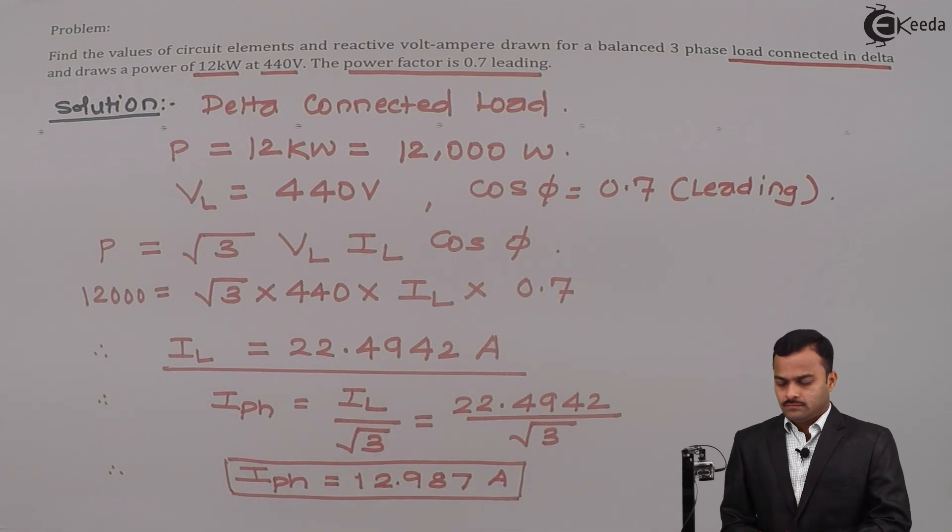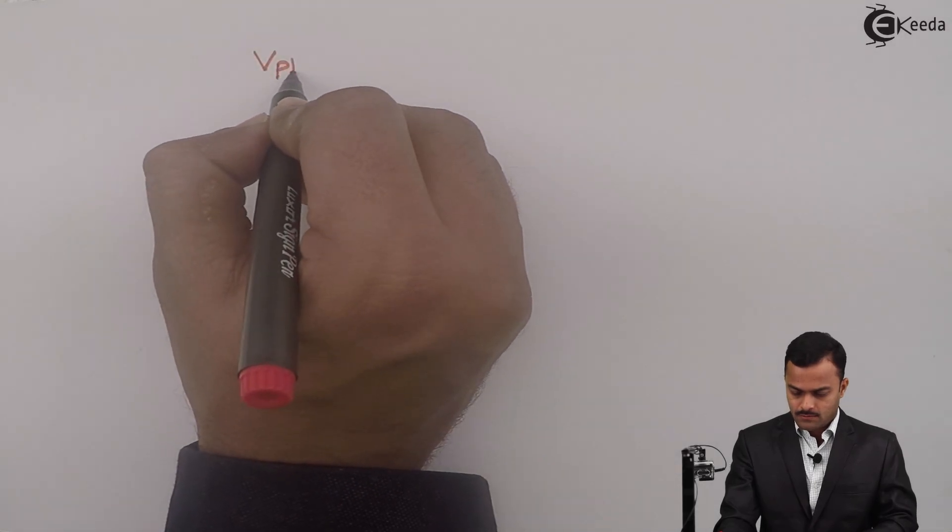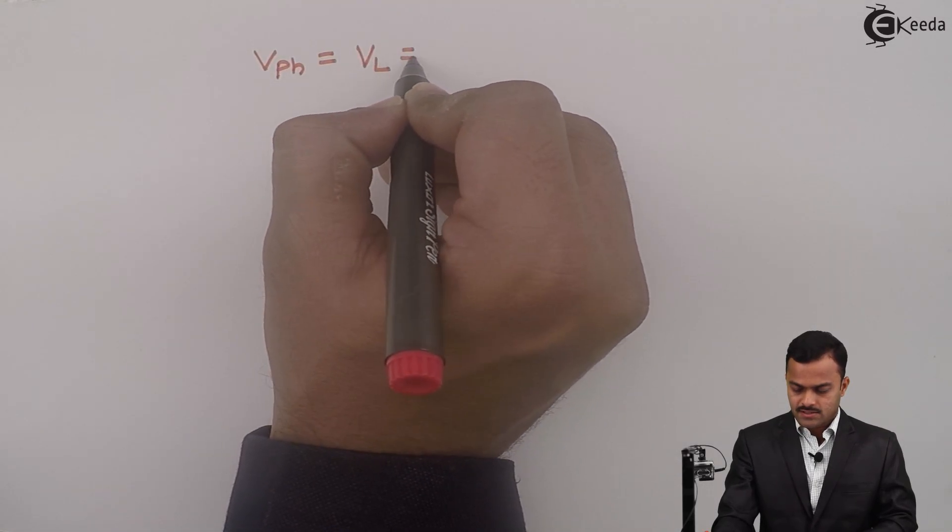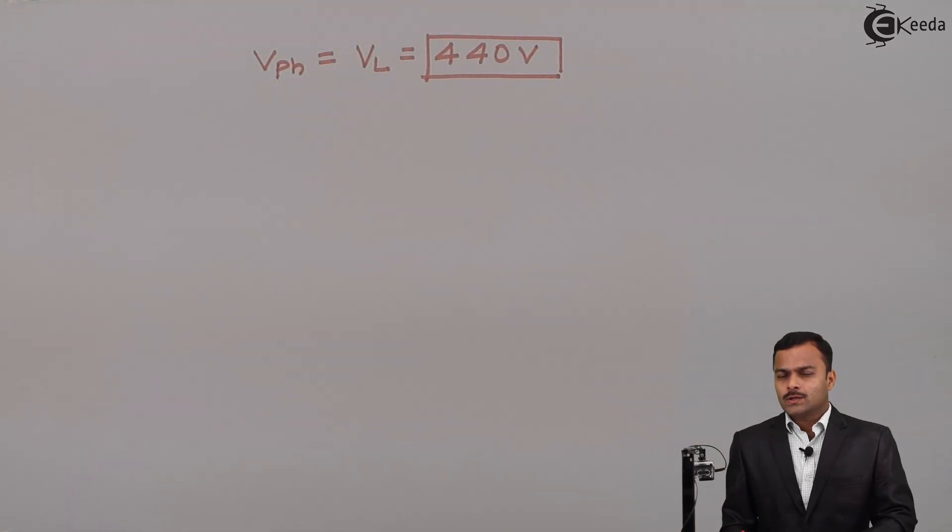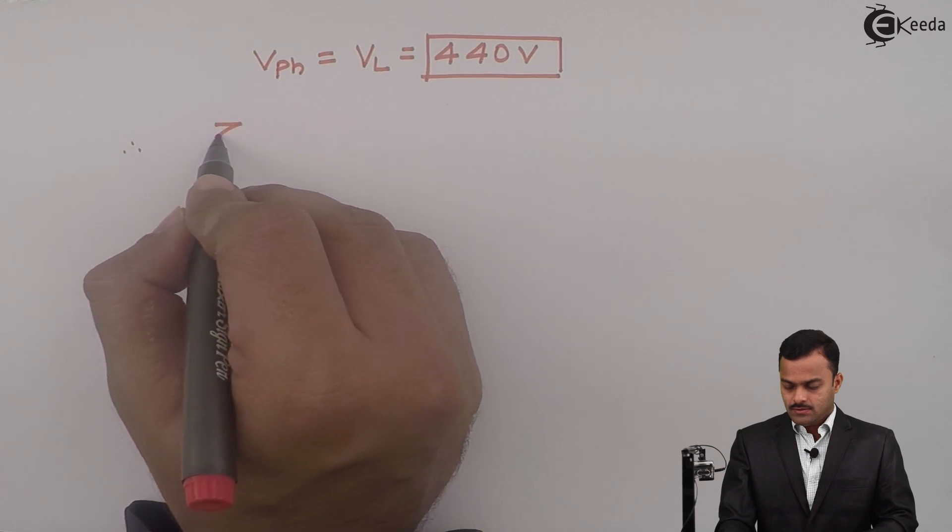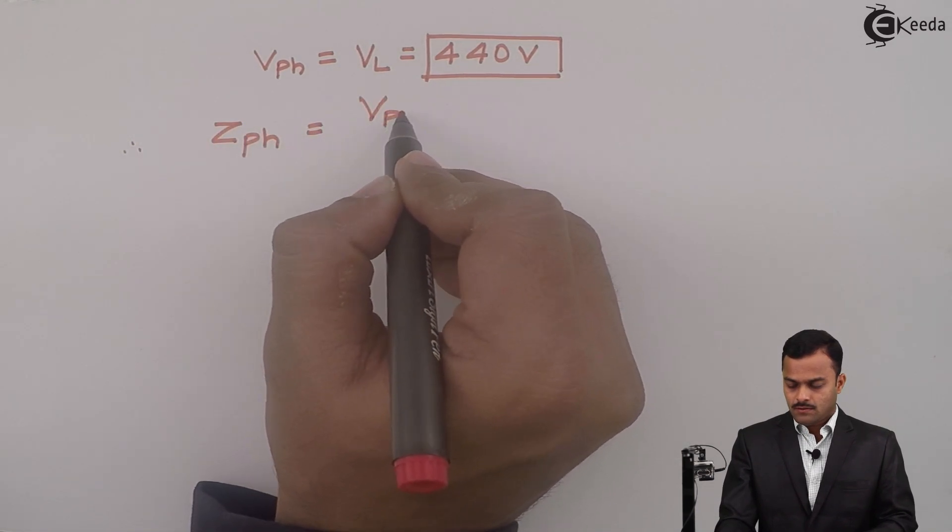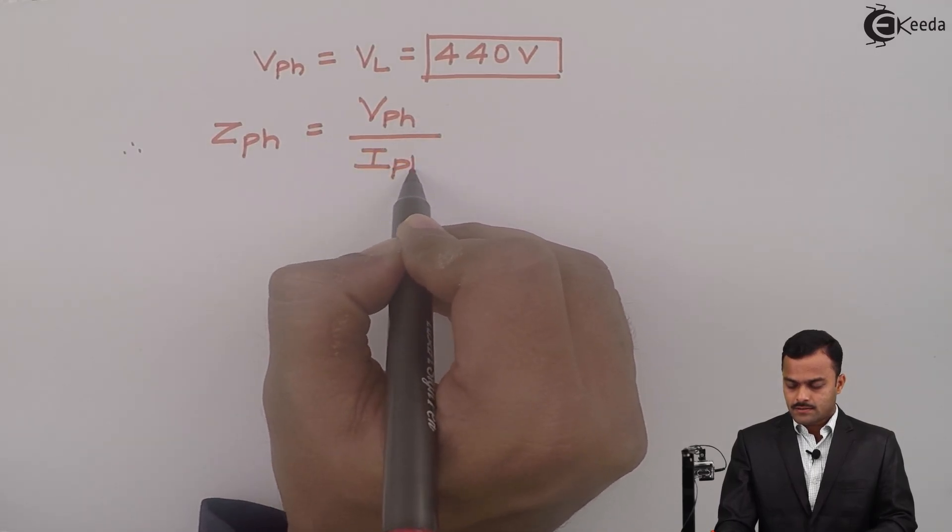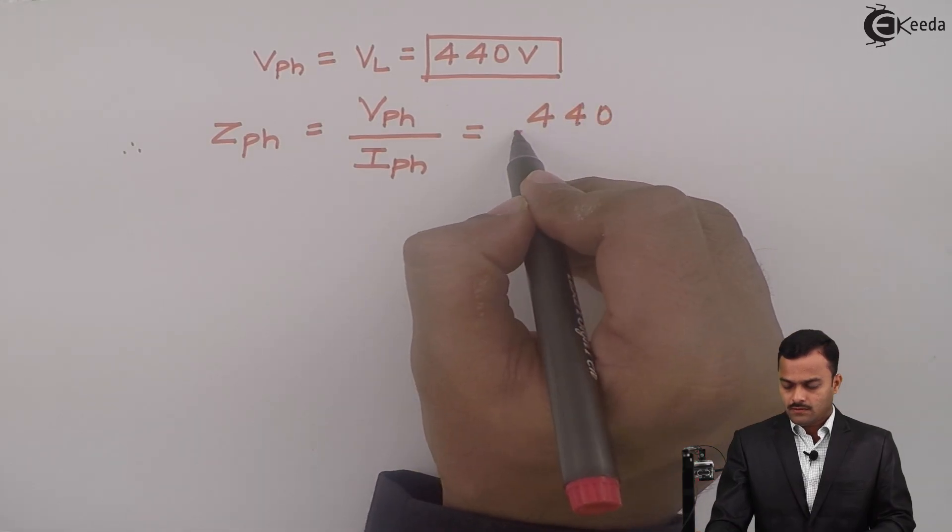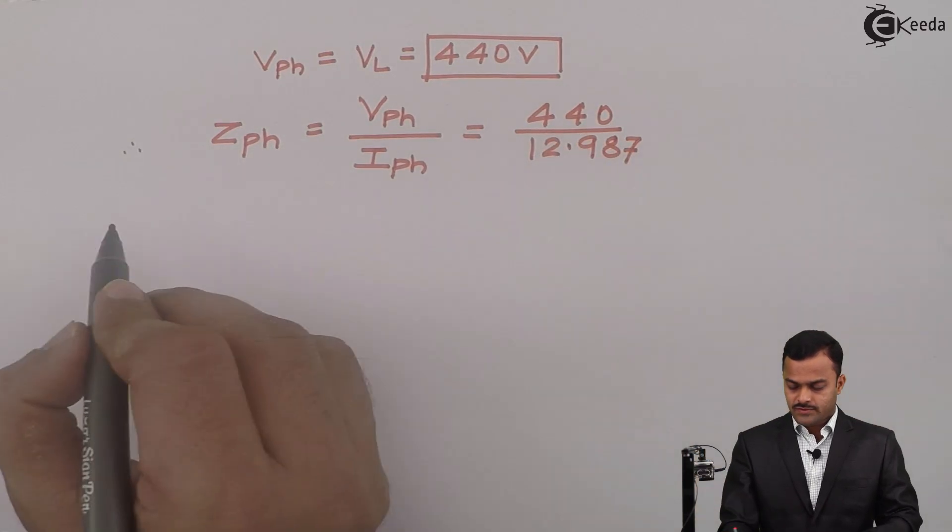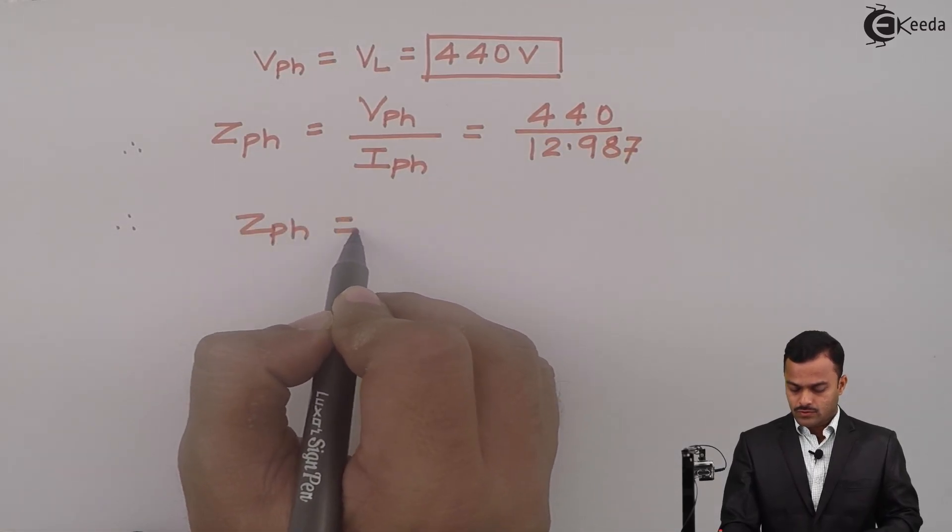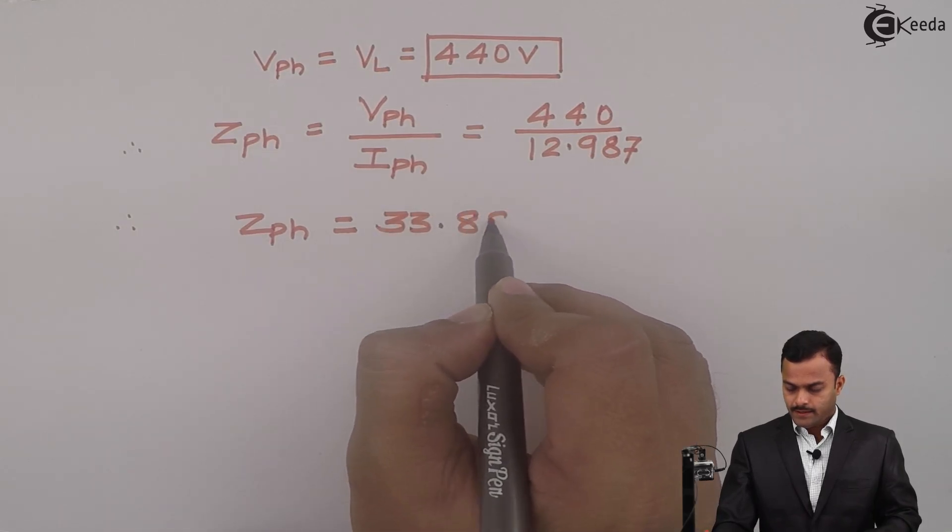It's a delta connected load, so for a delta connected load we know phase voltage is same as line voltage. VPh is same as VL, given as 440 volts. We have calculated IPh and VPh. I can get magnitude of ZPh, so ZPh is VPh upon IPh, equal to 440 divided by 12.987. If we solve, you will get ZPh equal to 33.88 ohms.